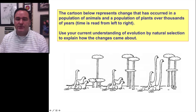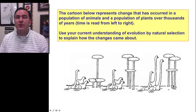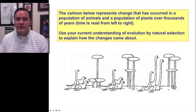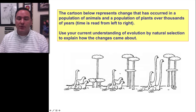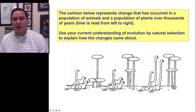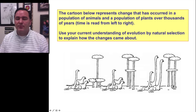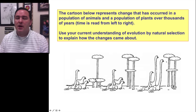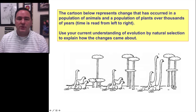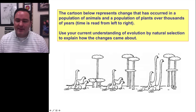Most dinosaurs that have longer necks are going to, on average, be able to eat more foliage, more of the trees. And so they are going to reproduce and produce offspring with longer necks, and so it's not a surprise that pretty soon you see dinosaurs with longer necks. And that's how you can explain that fun cartoon.